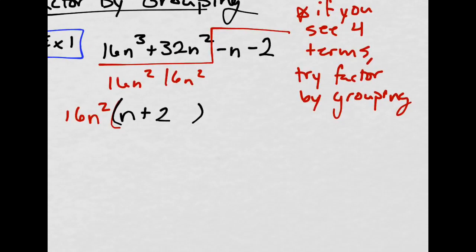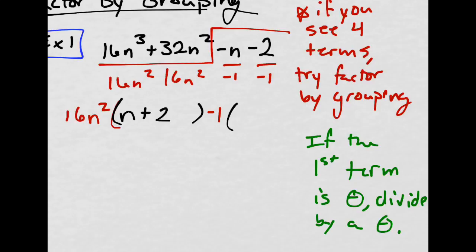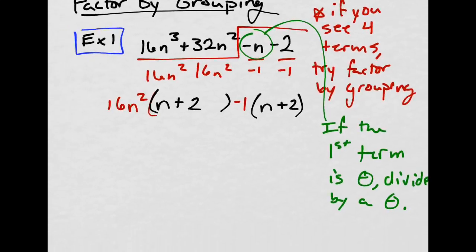And then I'm going to divide by negative 1 whenever this first term is negative. If the first term is negative, divide by a negative. So we divided by negative 1, and I get this regular n. Negative divided by negative is a positive and a plus 2.